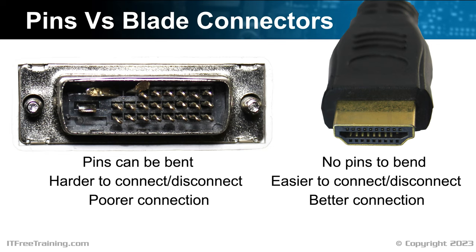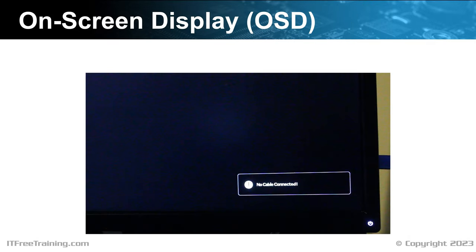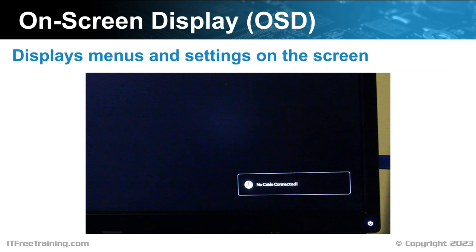Now that we have the cable plugged in, let's have a look at what else we need to configure. Hopefully you will plug in your monitor and it will just work. However, sometimes you may need to do some more configuration. All monitors nowadays, even older CRT monitors, will have an on-screen display. This is the ability for the monitor to display menus over the image that is currently displayed on the screen. The most common use of these menus is for setting the input to the monitor.